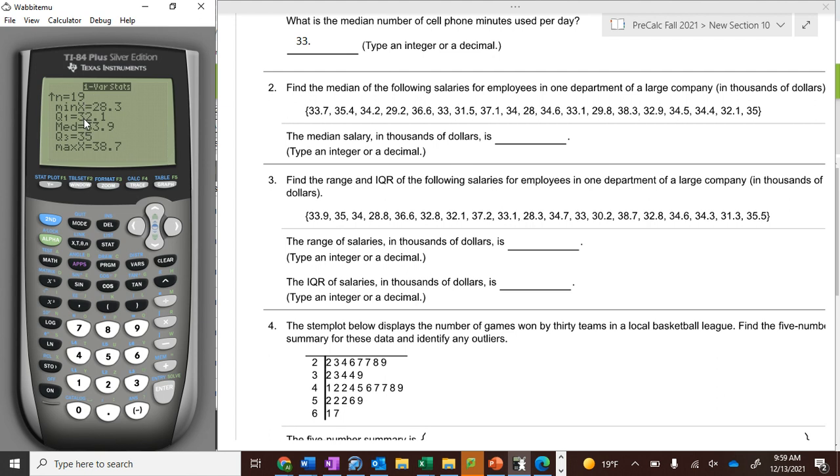If you arrow down, you have the minimum, quartile one, the median, quartile three, and the maximum. So if you're asked for the median, it would be 33.9. We good with that?